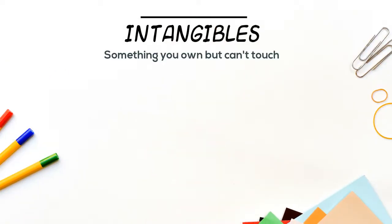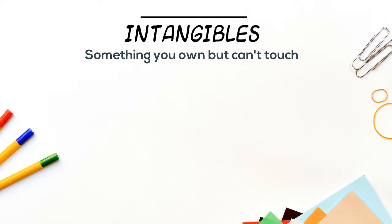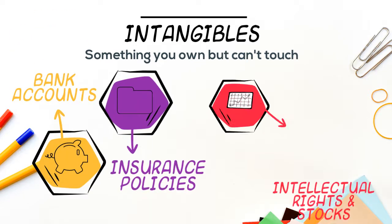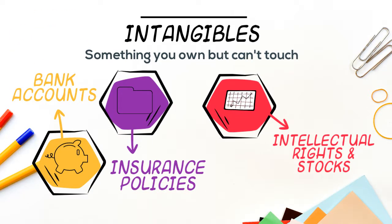Intangibles are things you own that you cannot see or touch. Intangibles are sometimes just legal rights that you have and no physical thing at all. Bank accounts, insurance policies, intellectual rights, and stocks are all examples of intangibles.